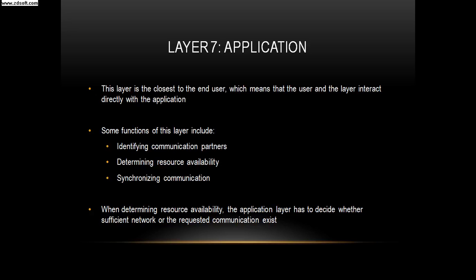This layer is the closest to the end user, which means that the user and the layer interact directly with the application. Some functions of this layer include identifying communication partners, determining resource availability, and synchronizing communication. When determining resource availability, the application layer has to decide whether sufficient network or the requested communication exists.